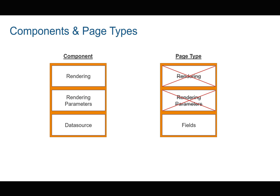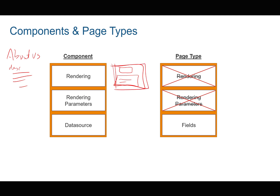A component is ultimately a rendering that has a specific look, and a data source which this UI reads from. It also has something called rendering parameters that enable you to configure how this data is being rendered. For instance, let's say we had an 'About Us' data source — it might have a title like 'About Us' and a description. I might have a rendering that shows it as a promo or as content. You can consider the rendering as your view and the data source as your model.